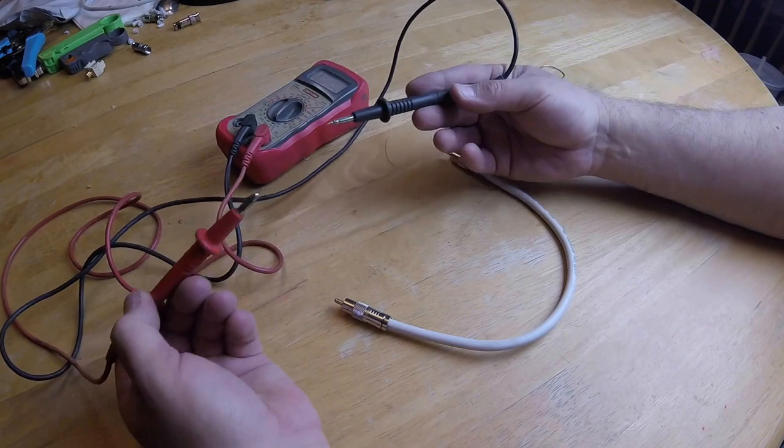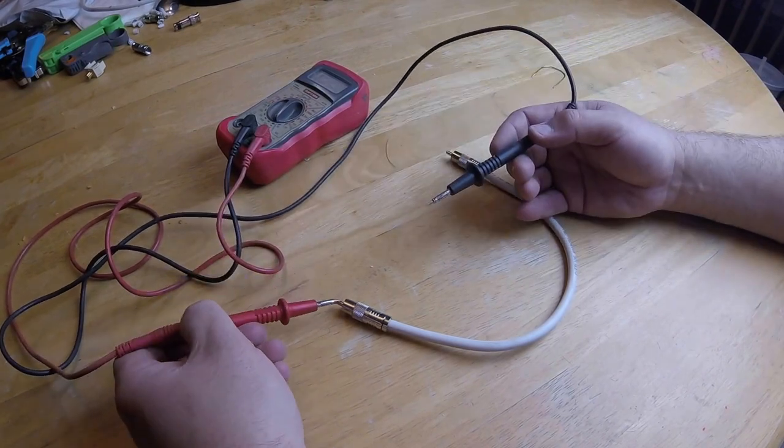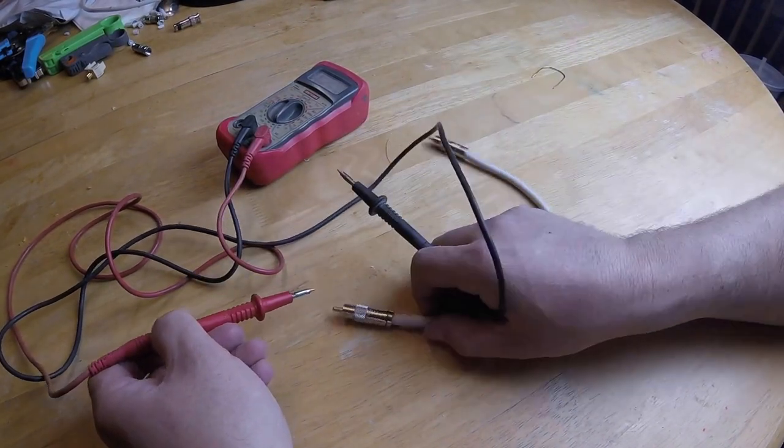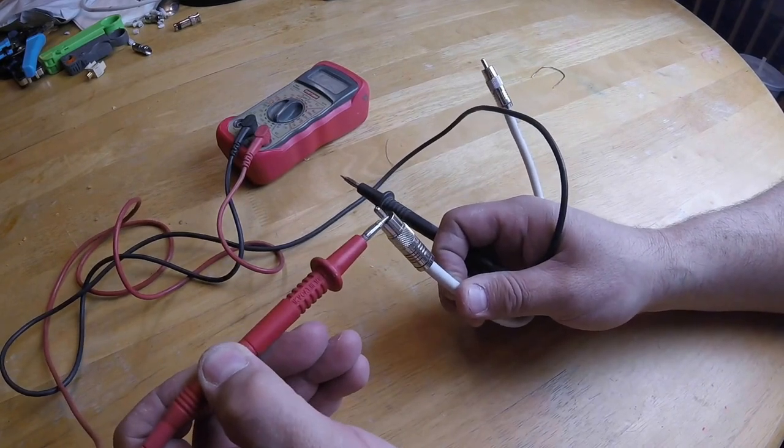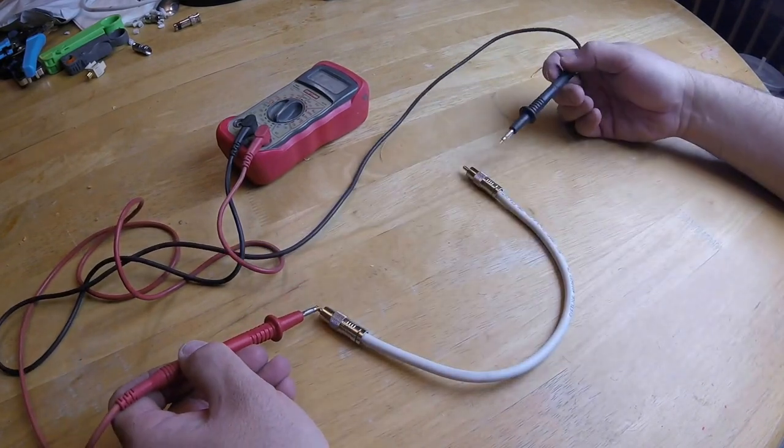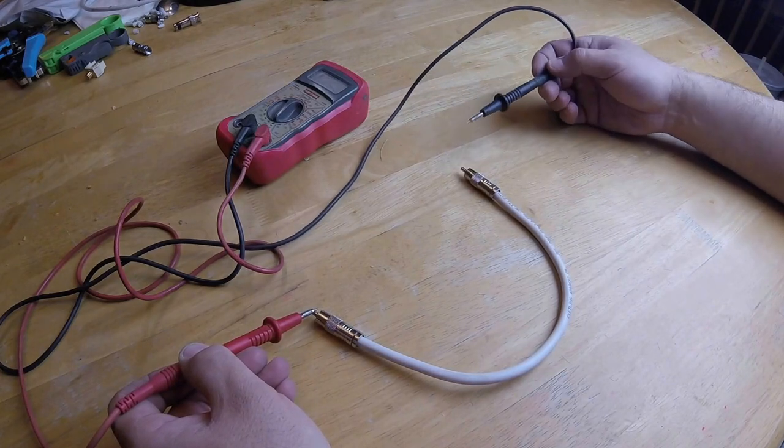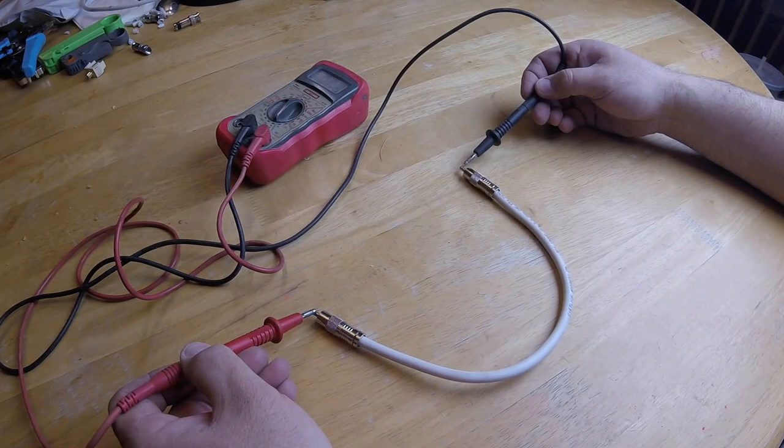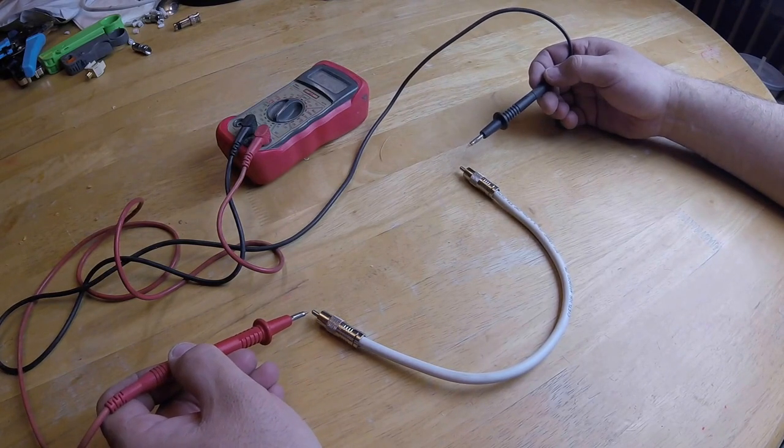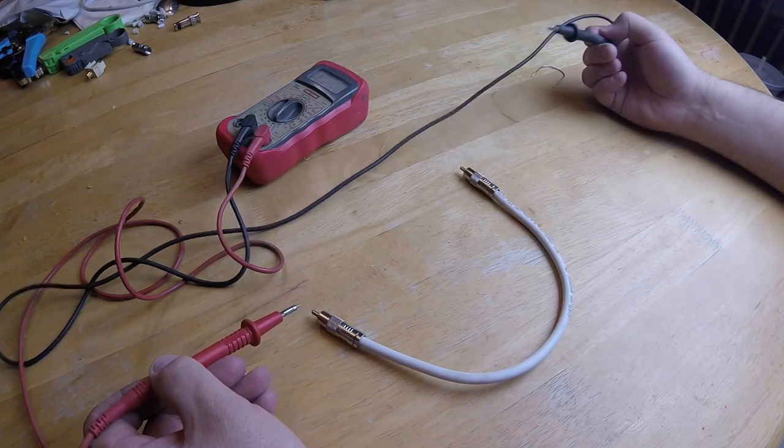So all I'm gonna do is take one end, doesn't matter the color, and I'm gonna put it on one tip without touching the outside. I'm only gonna touch the tip, not the tip and the outside, just the tip. Okay, right there. And then if I touch this tip over here, it should beep. Look at that. That means I have a good strong signal from tip to tip.